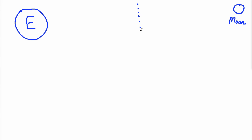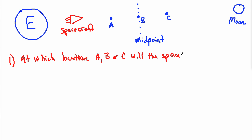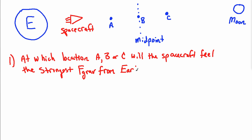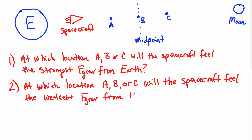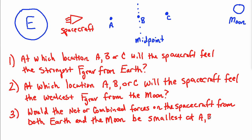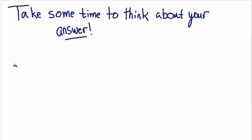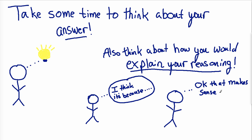Now consider a final case: the Earth labeled e, the Moon as a smaller object at a distance away. I've identified a midpoint between them, with point a closer to the Earth, point c closer to the Moon, and point b at the midpoint. A spacecraft is traveling between Earth and the Moon. Think about: at which location — a, b, or c — will the spacecraft feel the strongest gravitational force from Earth? At which location will it feel the weakest gravitational force from the Moon? And would the net combined force from both Earth and Moon be smallest at a, b, or c? Think about your answer and how you'd explain your reasoning to a classmate. There'll be a quiz over the force of gravity when you come back to class next.